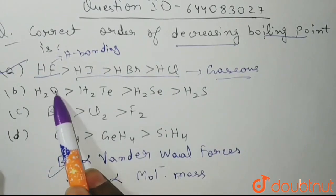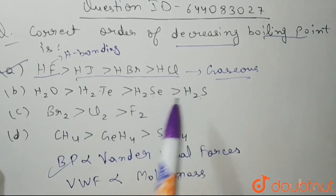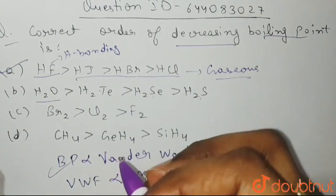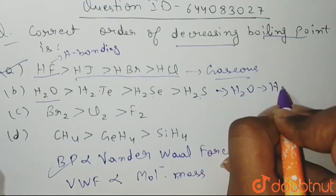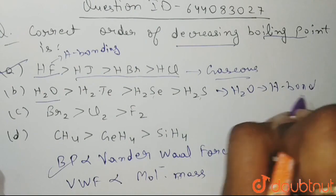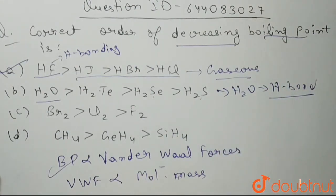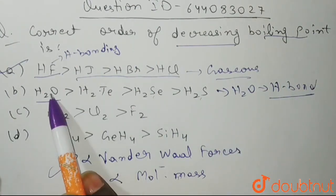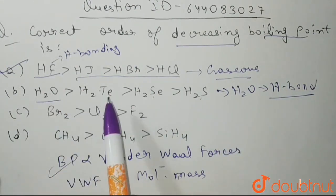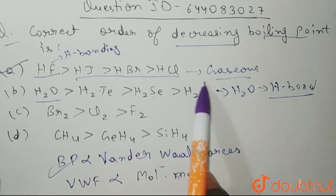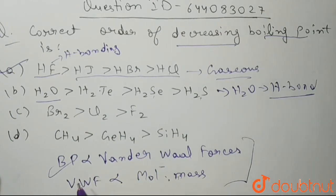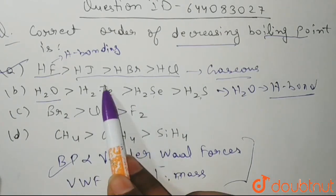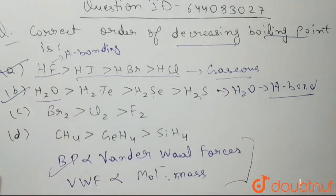Let's go to option B: H₂Te, H₂Se, and H₂S. Similarly, H₂O is going to have hydrogen bonding, so it will have a higher boiling point. And for H₂Te, H₂Se, and H₂S, the same pattern follows — greater the molecular mass, greater will be the Van der Waal forces and thus greater the boiling point. So option B is also correct.